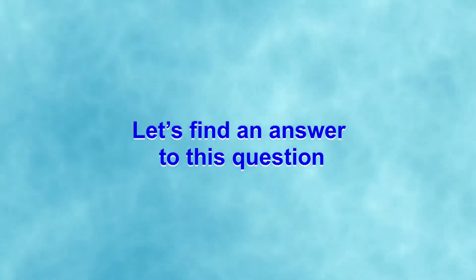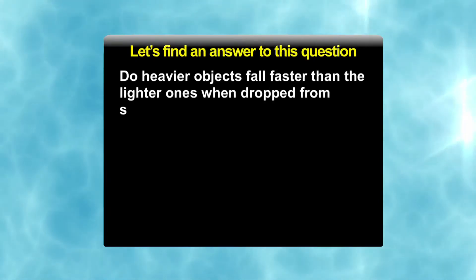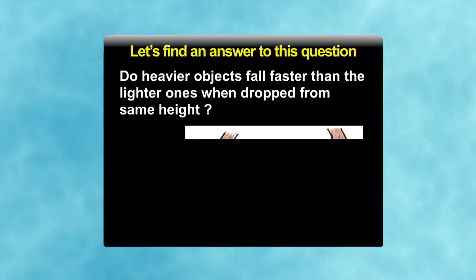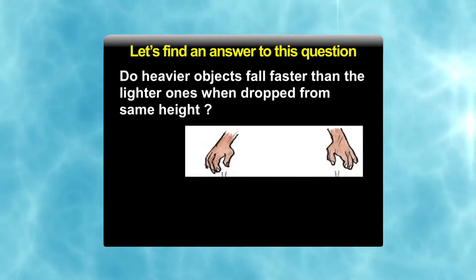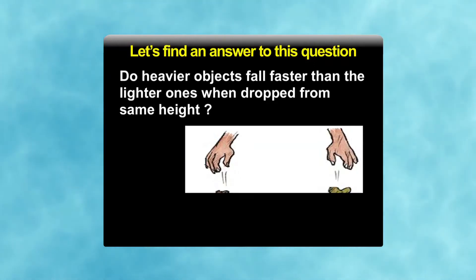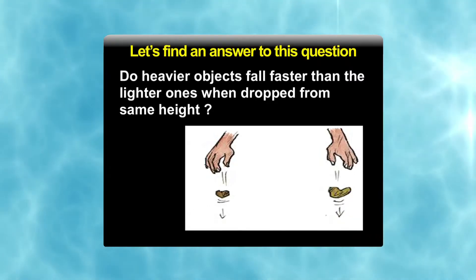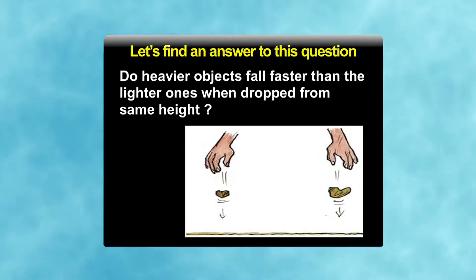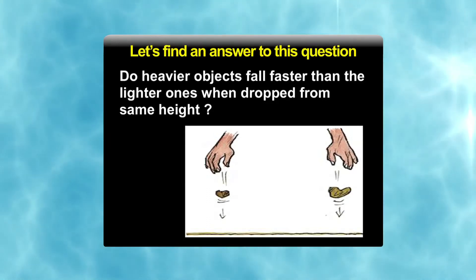The gravitational force due to earth is also known as gravity. Do heavier objects fall faster than lighter ones when dropped from the same height? Let us perform this activity: ask a friend to stand at the rooftop of a two-storey building with stones of different masses in each hand, drop them together, and carefully observe their fall. Why do both stones reach the ground at the same time?